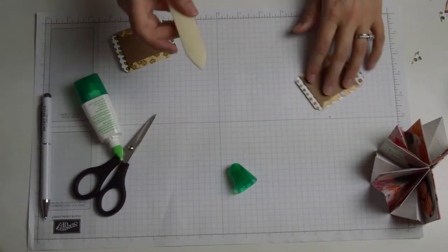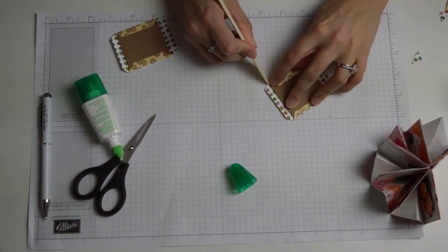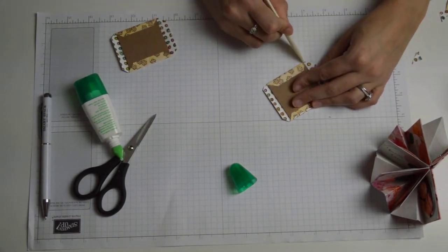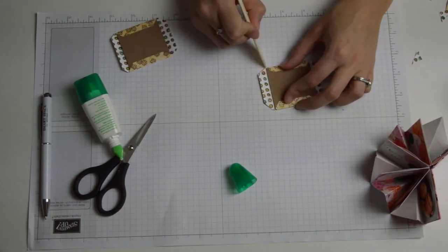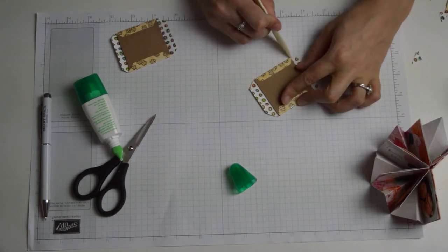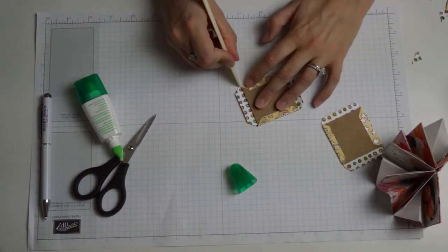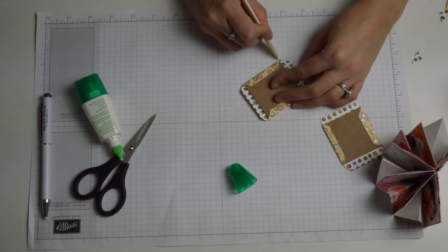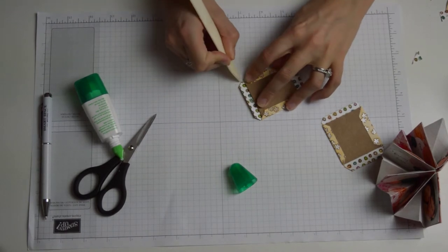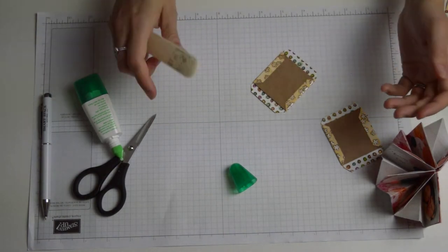When they're all stuck down now for one of the fiddly bits you need to get the tip of your bone folder and you need to push in at the corner so you're effectively wrapping that extra excess just around the edge of the corner and this is just going to make it a nice neat edge and the papers are going to fold over into each other and you're not going to have a nasty join. You do need to be a little bit forceful so put a little bit of pressure when you're pushing inwards.